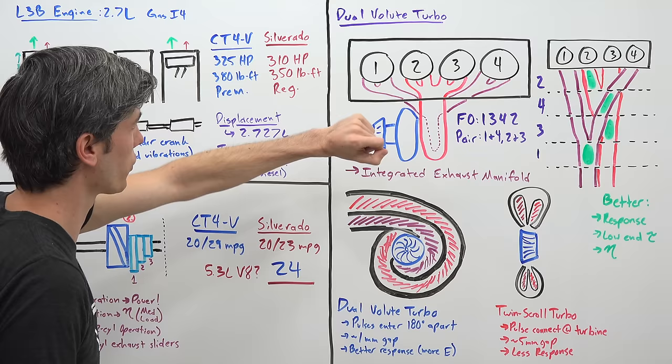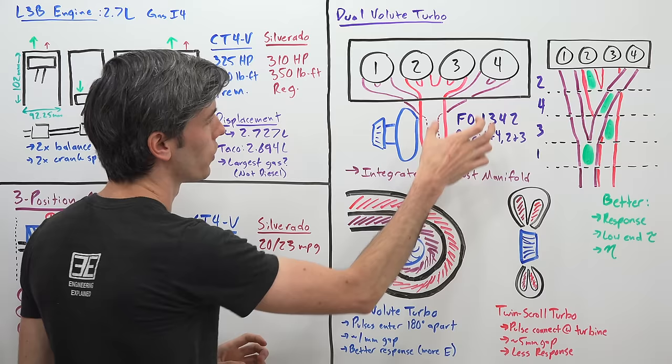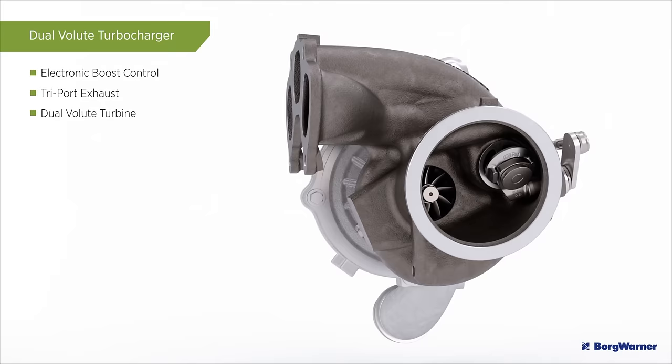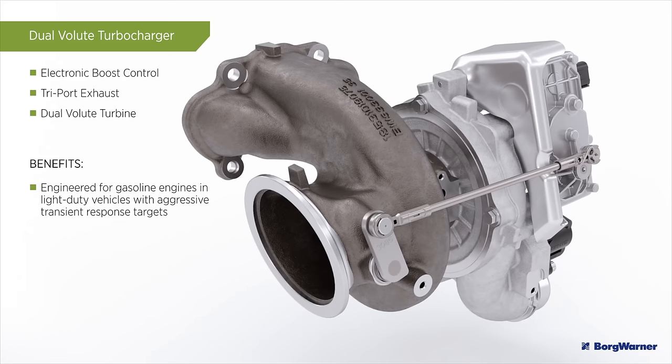So looking at the engine block itself, the exhaust manifold is actually integrated within it. So you've paired up cylinders one and four and you've paired up cylinders two and three. So cylinders two and three send their exhaust pulses to that top volute and then cylinders one and four send their exhaust pulses to that bottom volute. And your firing order is one three four two and so you're alternating between which volute is actually getting that exhaust pulse.